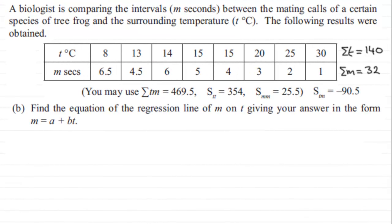Hi. Now for this next part of the question, we've got to find the equation of the regression line of m on t, giving the answer in the form m equals a plus bt. You'll notice I've written this answer from Part A up here, STM equals minus 90.5. If this is a question you'd like to have a go at, just pause the video, come back when ready and you can check your solution with mine.